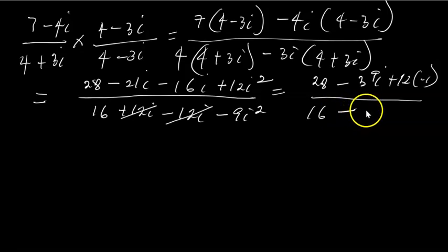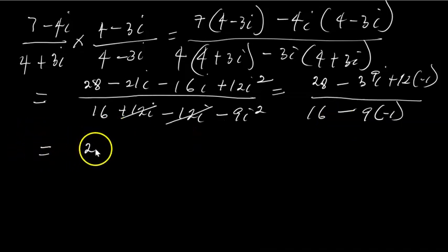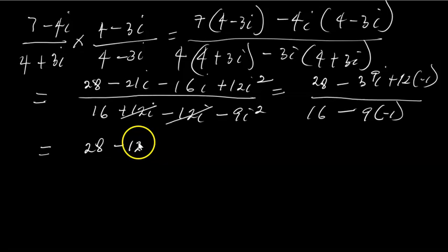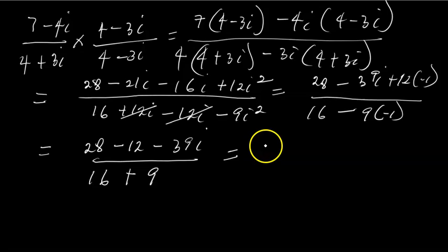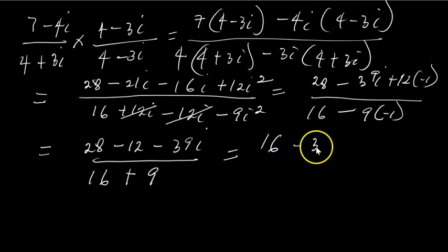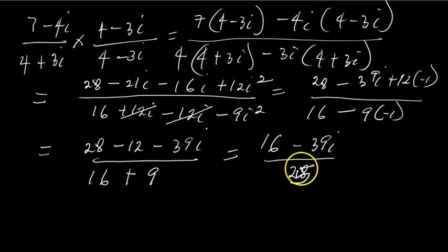In the denominator, +12i minus 12i cancels to zero — you can see where the conjugates begin to play their role. So the denominator becomes 16 - 9 × (-1) = 16 + 9 = 25. The numerator becomes 28 + 12 × (-1) - 39i = 28 - 12 - 39i = 16 - 39i. So the result is (16 - 39i) / 25. You can use your calculator to divide 16/25 and -39/25.